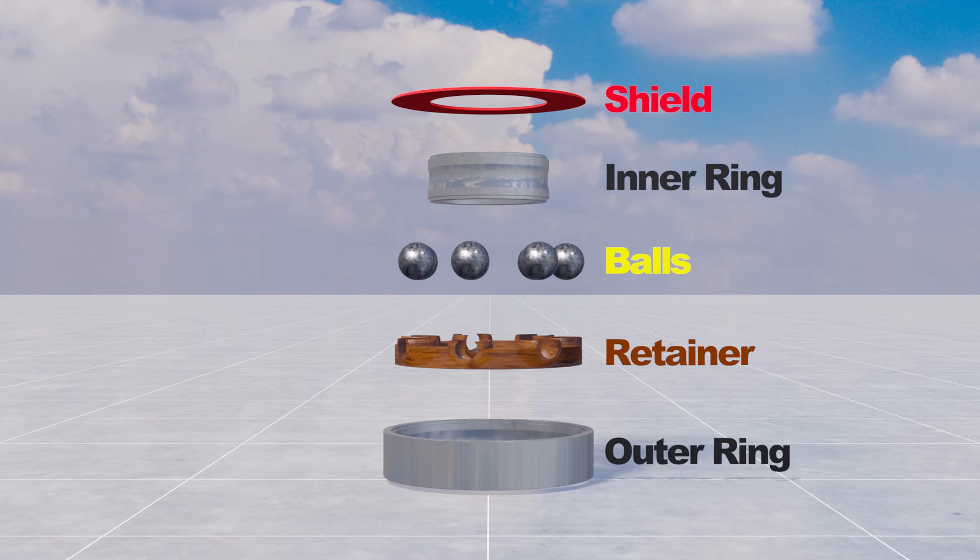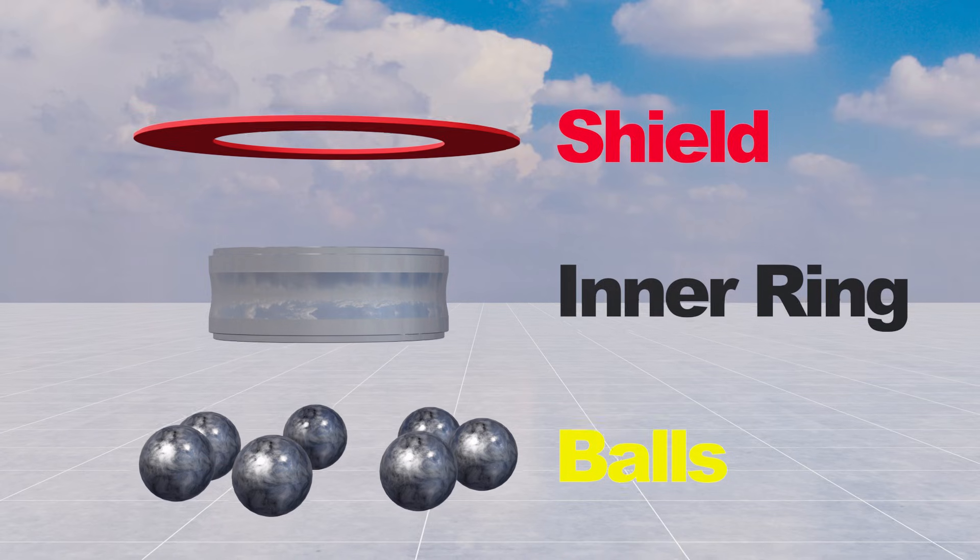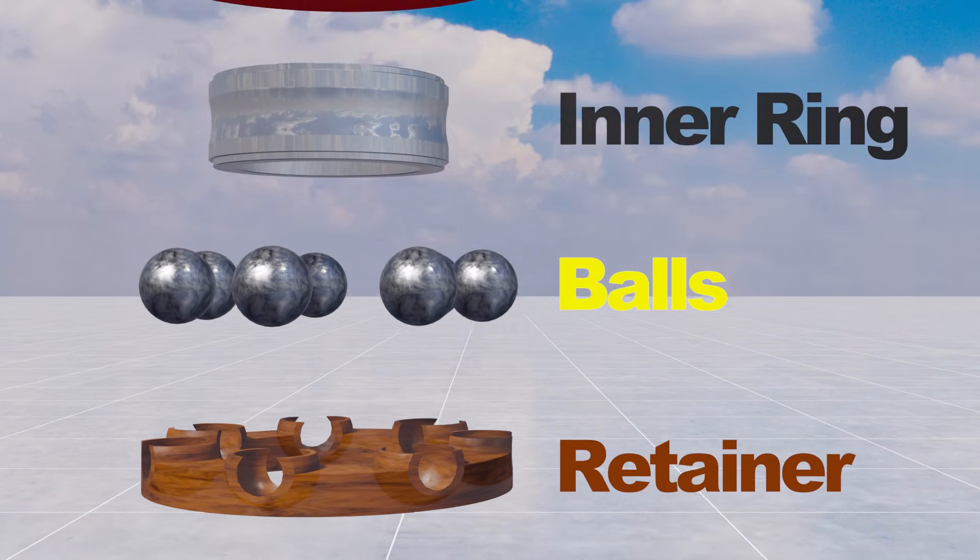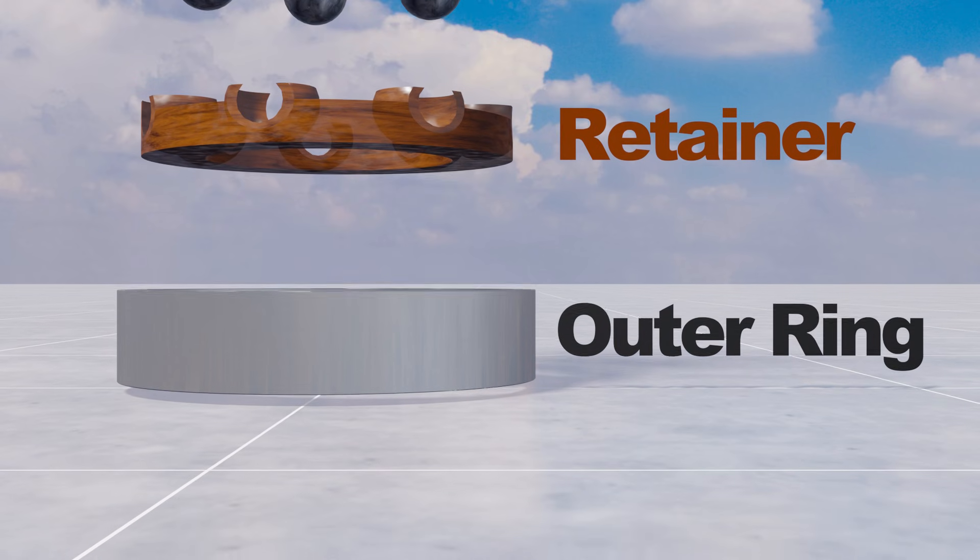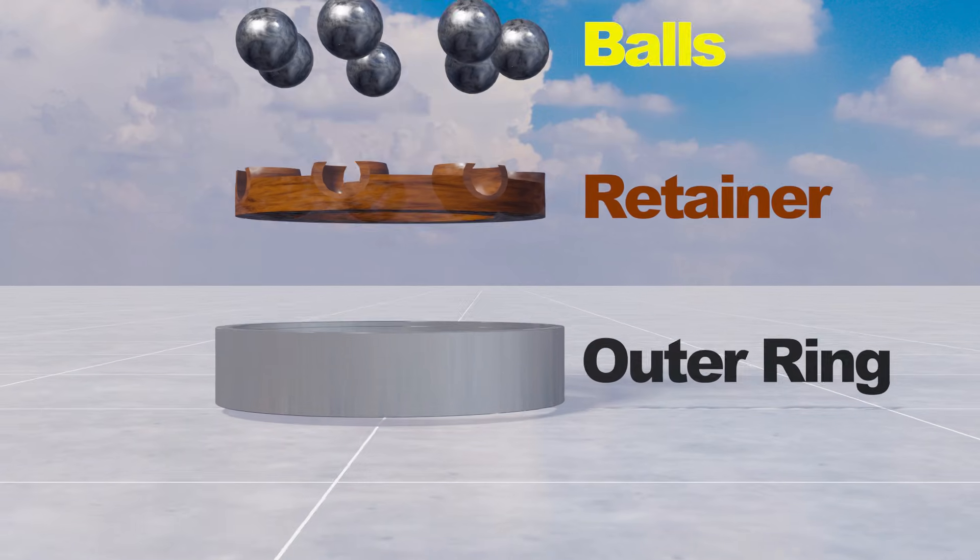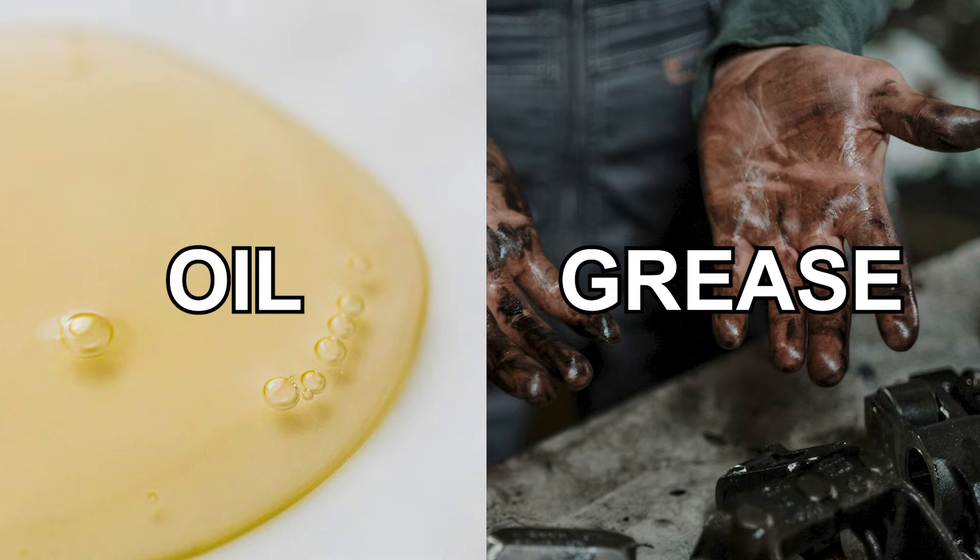A typical bearing consists of a shield, an inner ring, balls, a retainer, and an outer ring. There are two types of lubricants: oil and grease. We'll discuss their properties later.